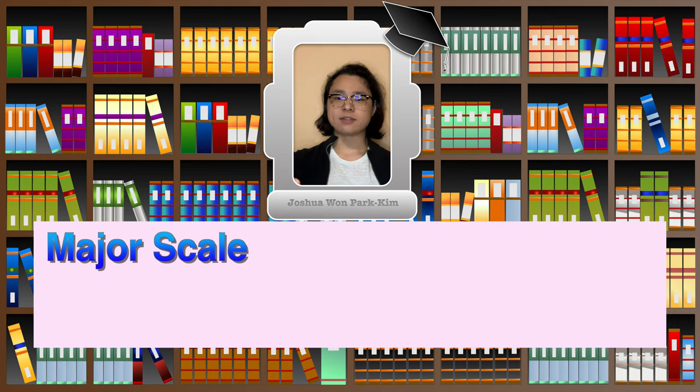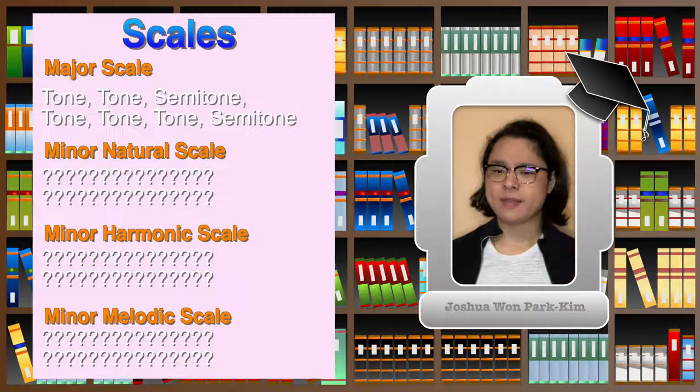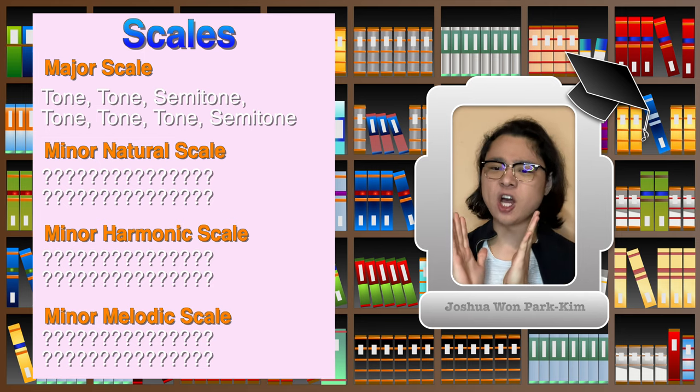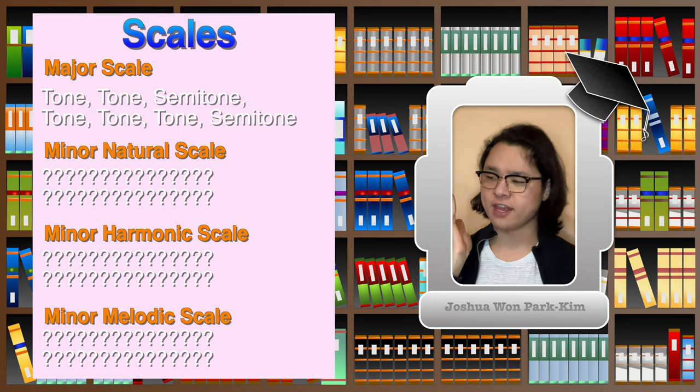And you know the rest. Let's revise: major scales consist of tone, tone, semitone, tone, tone, tone, semitone. Now, what is a minor scale? Think about this: a major scale has a very happy kind of music, but a minor key is either sad or very angry. There are names for each of these minor scales. Let's start off with the natural minor scale.